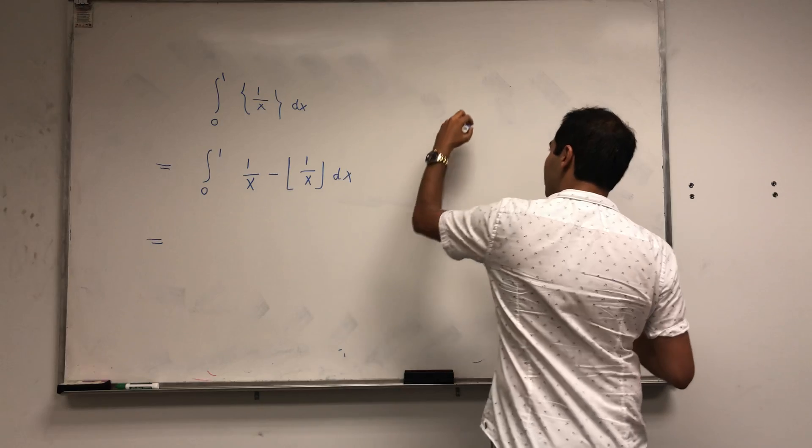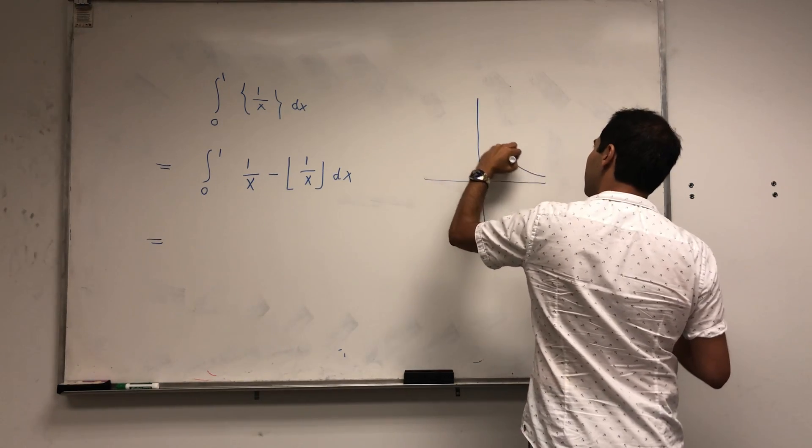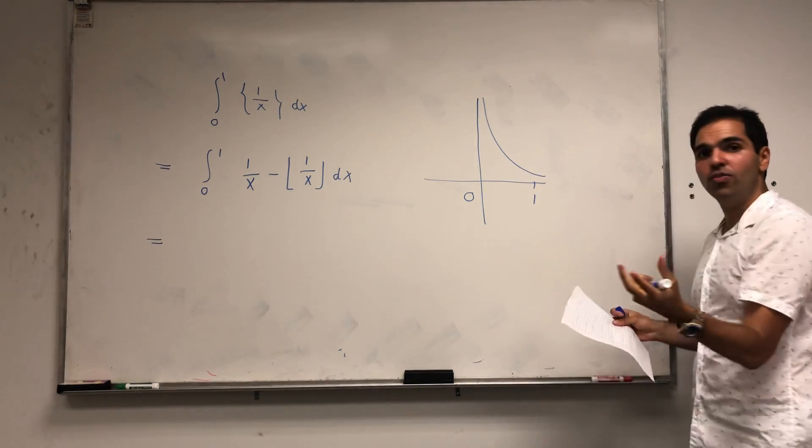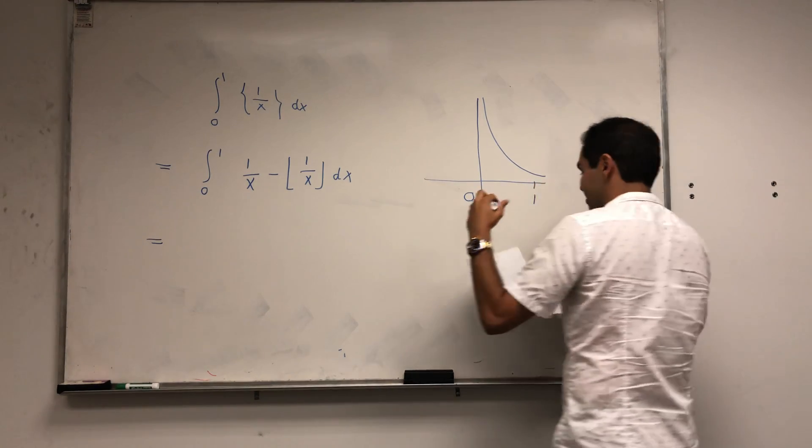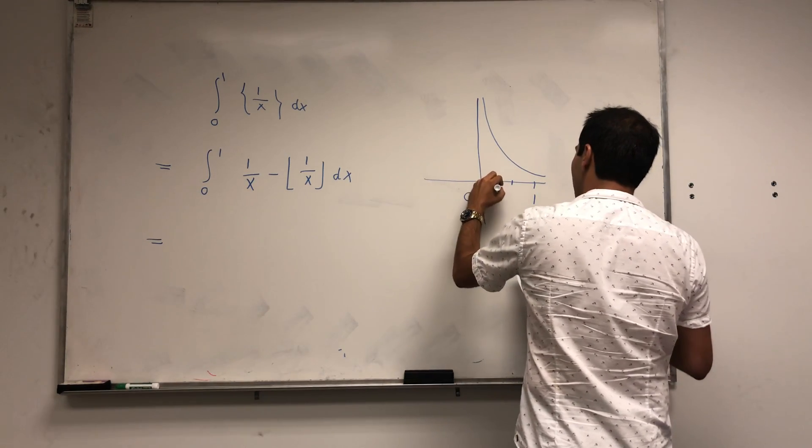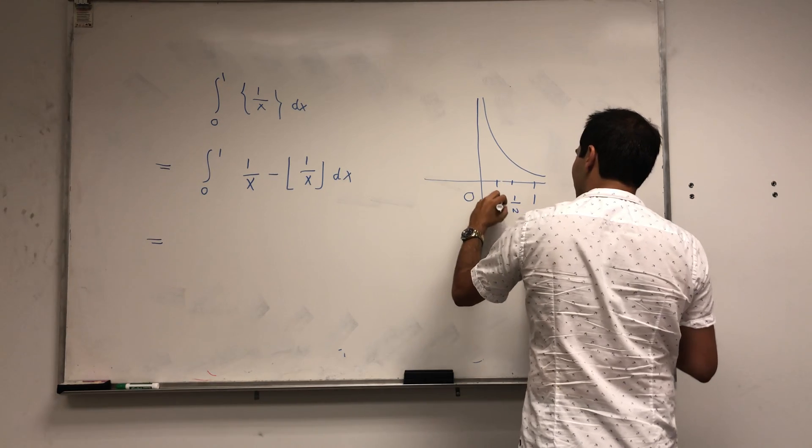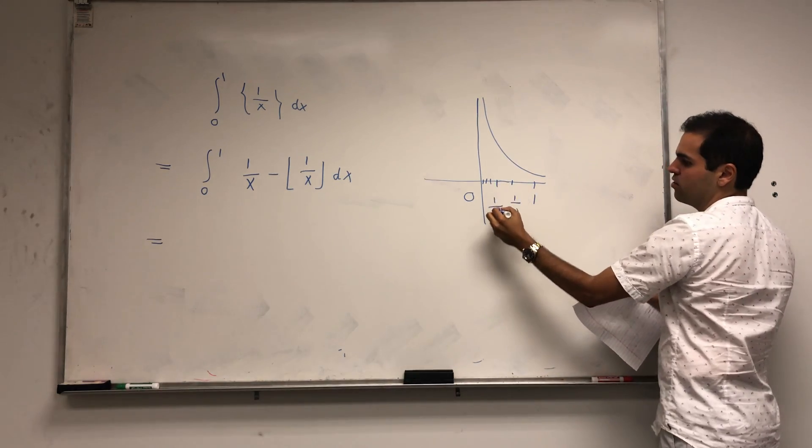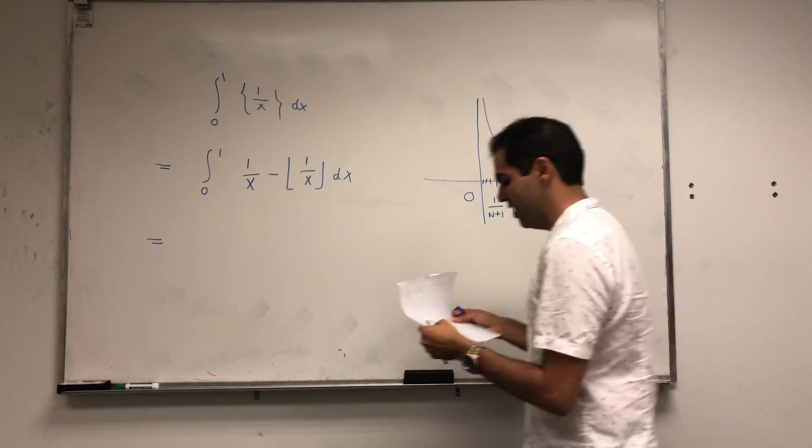And what we like to do is the following. So suppose this is 1 over x. And this is 0 and 1. We want to take the interval 0 and 1 and decompose it in small pieces. Mainly pieces of the form 1 over n and 1 over n plus 1.